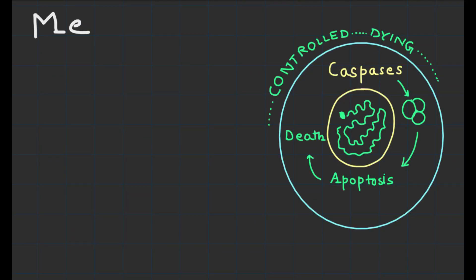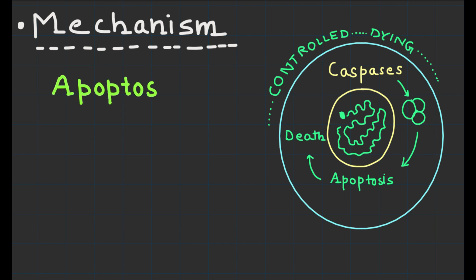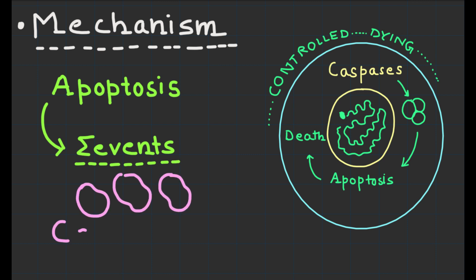Now let's break down the mechanisms behind these two types of cell death. In apoptosis, a series of events are triggered within the cell leading to its controlled dying process. One of the key players in this process is a group of proteins called caspases, which act as the executioners of the cell.